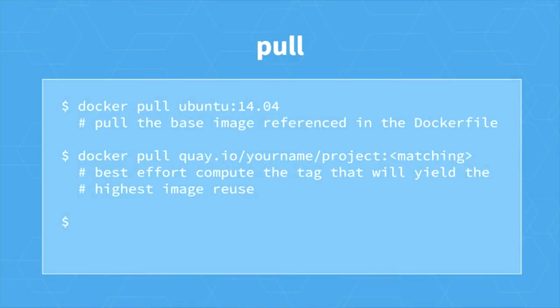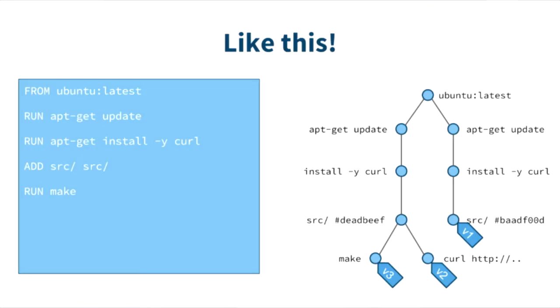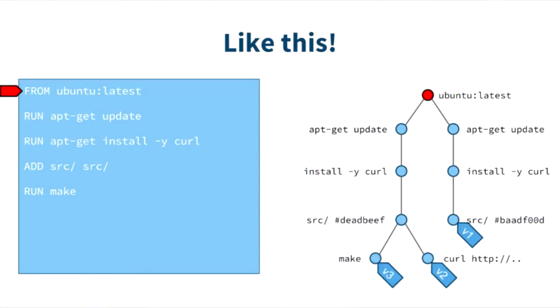To start the cache matching algorithm, we pull down the base image referenced in the Dockerfile — this gives us a point of derivation from which we can find the closest caching tag. Then we do a search to find the closest tag and pull it to the machine. You can see here an example Dockerfile on the left and an equivalent tree representing the repository being built on the right. We pull the base image — in this case Ubuntu latest — look it up in the repository, and find it as the root of the caching tree. We found two branches possible, and we walk each step of the Dockerfile matching commands until we reach a point where it diverges.